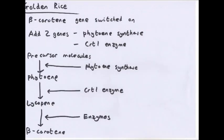Our second example is golden rice. The previous example was genetically engineering something to get a useful product; this one is to improve it. Normal rice has a gene which can code for beta-carotene, a pigment found in plants. It's normally present in rice, but in the part we eat - the endosperm - it's switched off. Beta-carotene is really good for getting vitamin A, which is good for eyesight, cell growth and development, epithelial tissue, and bones. A lot of people in the world have vitamin A deficiency, particularly in Africa and Southeast Asia, so it would be really good if rice could provide vitamin A.